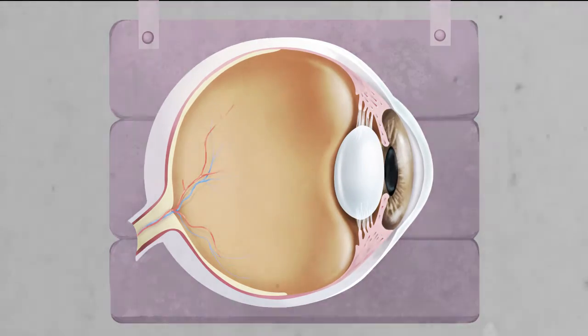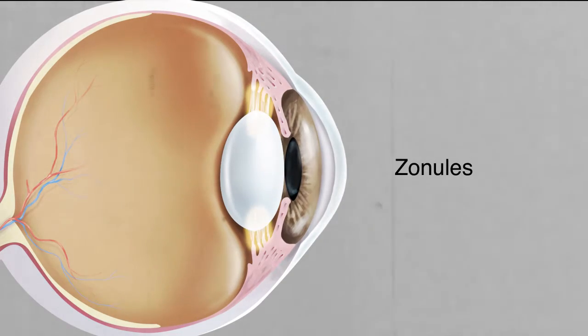Attached to the lens are suspensory ligaments, called the zonules. The zonules are connected to the ciliary body, a group of muscles responsible for deforming the shape of the lens when it focuses on objects.